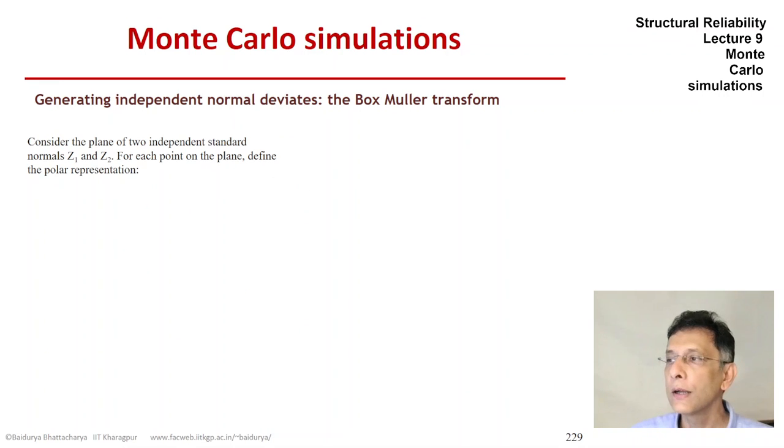So let's now look into a little detail at the Box-Muller transformation. Let's say we represent two independent standard normals, Z1 and Z2 on the Cartesian plane. And so we can represent that in terms of polar coordinates, the radius r and the angle theta.